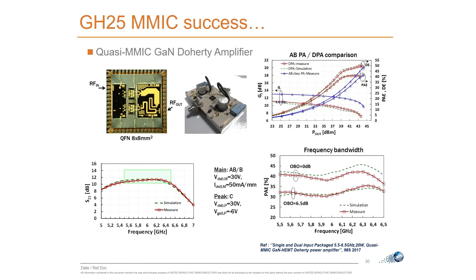One recent example is a Doherty MMIC around 6 GHz showing very good agreement between gain simulation and measurement from 5.5 to 6.5 GHz, and good agreement on power-added efficiency — over 40% near saturation and still around 30% at 6.5 dB backoff, which is very good Doherty performance.